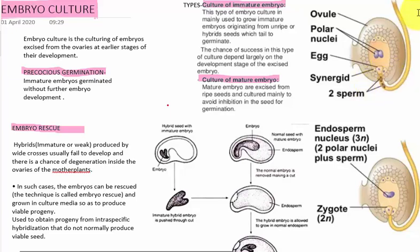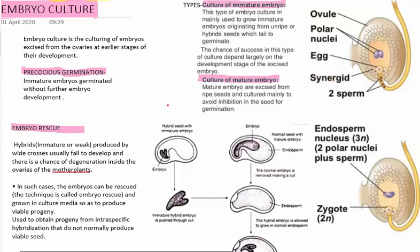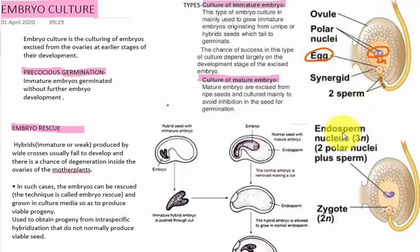So when fertilization occurs, the pollen tube enters through the micropyle and it consists of two male gametes — two sperms. So one sperm will directly fuse with this egg and form the zygote. Another sperm will fuse with the polar nuclei. So there will be the addition of 1N, and in total the endosperm nucleus will form — that is the 3N nucleus — because in the central cell already the 2N polar nuclei is present.